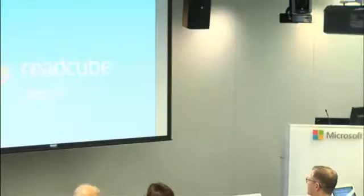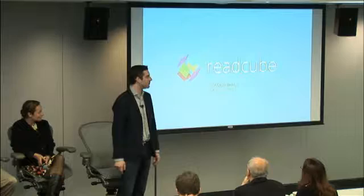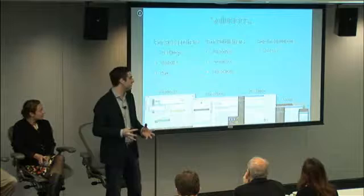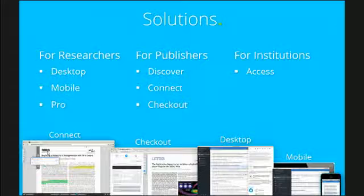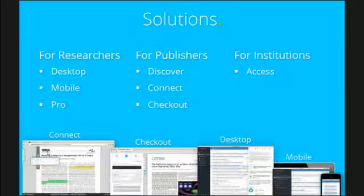I'll talk a little bit about ReadCube and some of the access solutions that we've been thinking about over the last couple of years and some of the observations that we've had doing a variety of different pilots in this space. Some of you may know ReadCube from the reference management desktop tool space, which is where we started. It's the space closest to home in terms of addressing the needs of researchers. In trying to create tools for organizing your research literature and getting discovery around other things you should be reading, you naturally come across access boundaries.